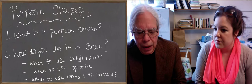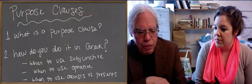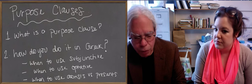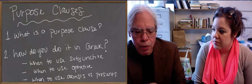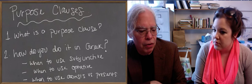So systematically in the language, that difference between what's more real and what's less real, or what's more true and what's less true, govern the choice between the subjunctive and an optative. So how does that work in the case of purpose clauses?